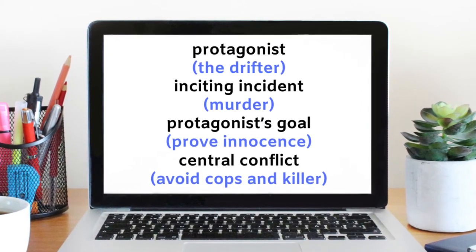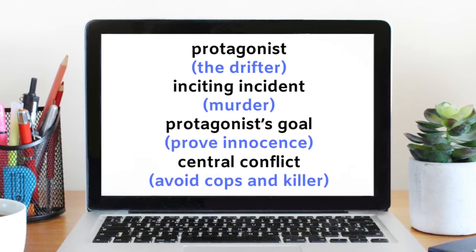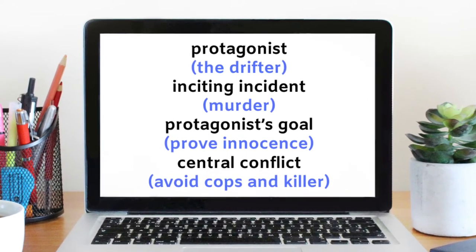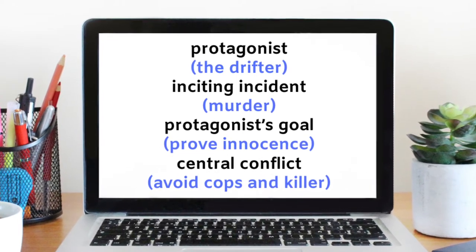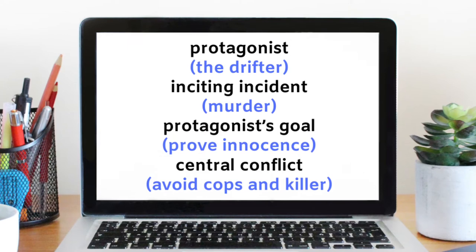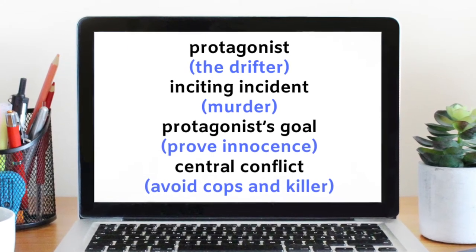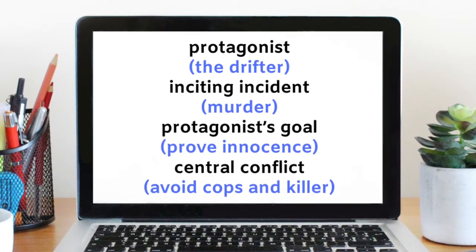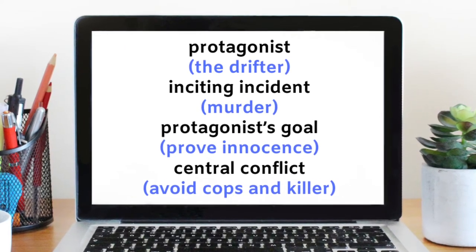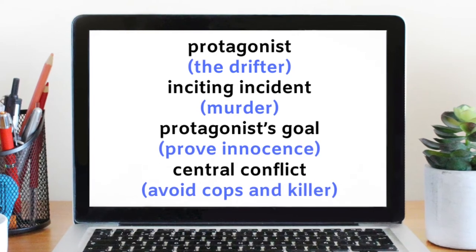Those four elements — the protagonist, inciting incident, protagonist goal, and central conflict — are typically written in that order. But as long as all four main elements are included, a logline can be written in any order you like.